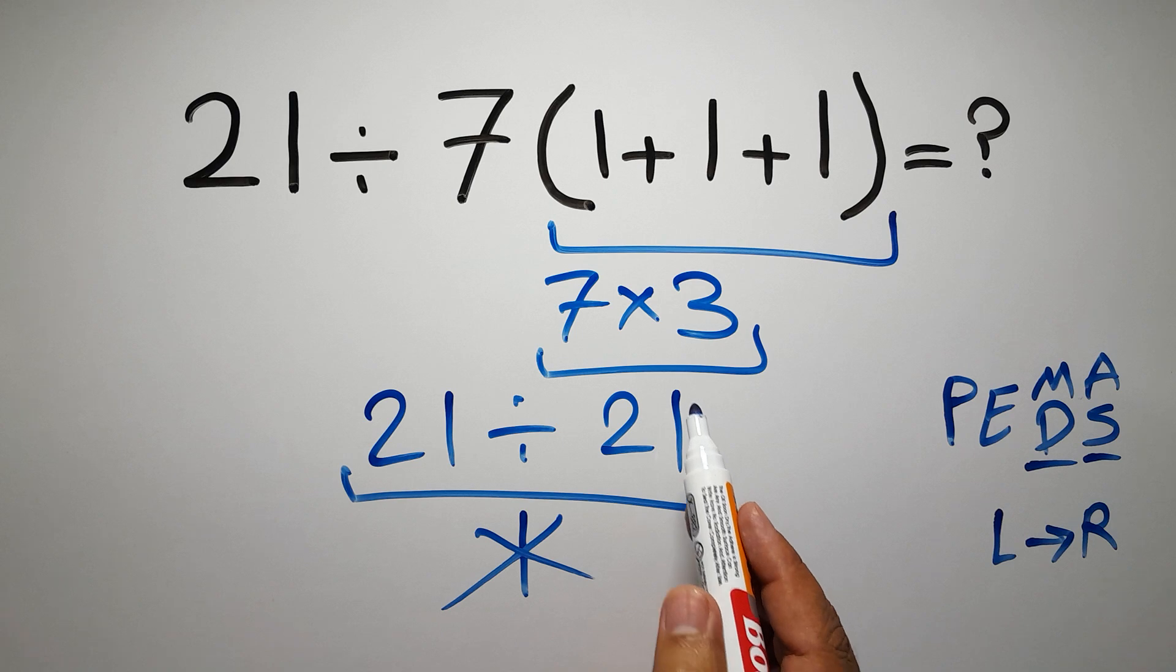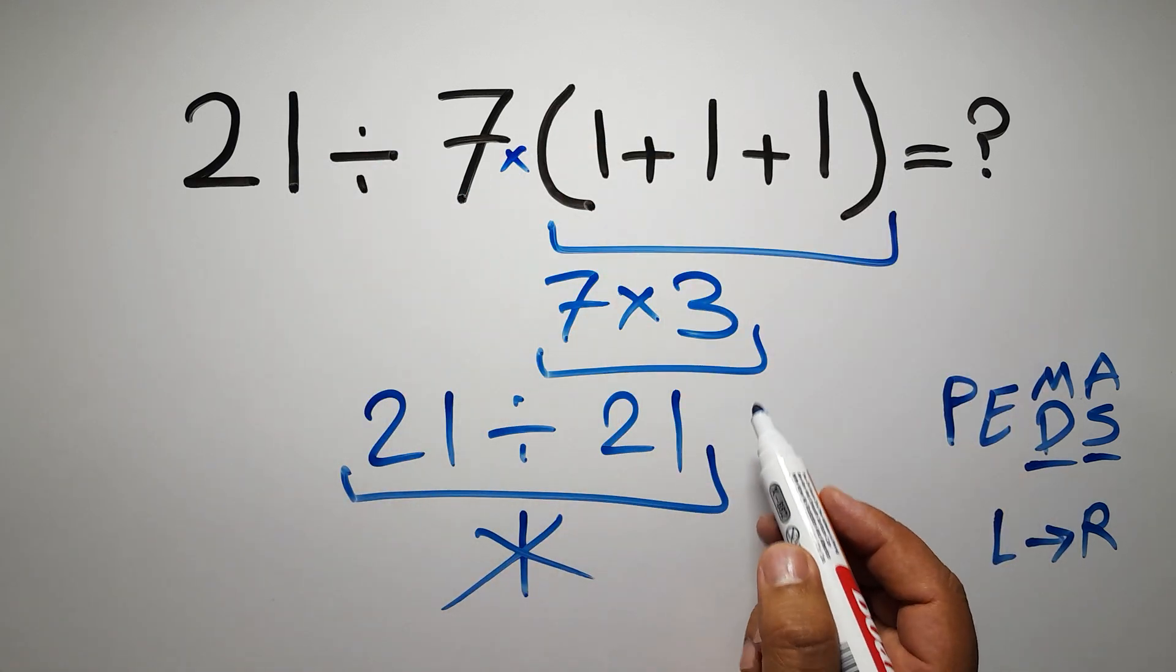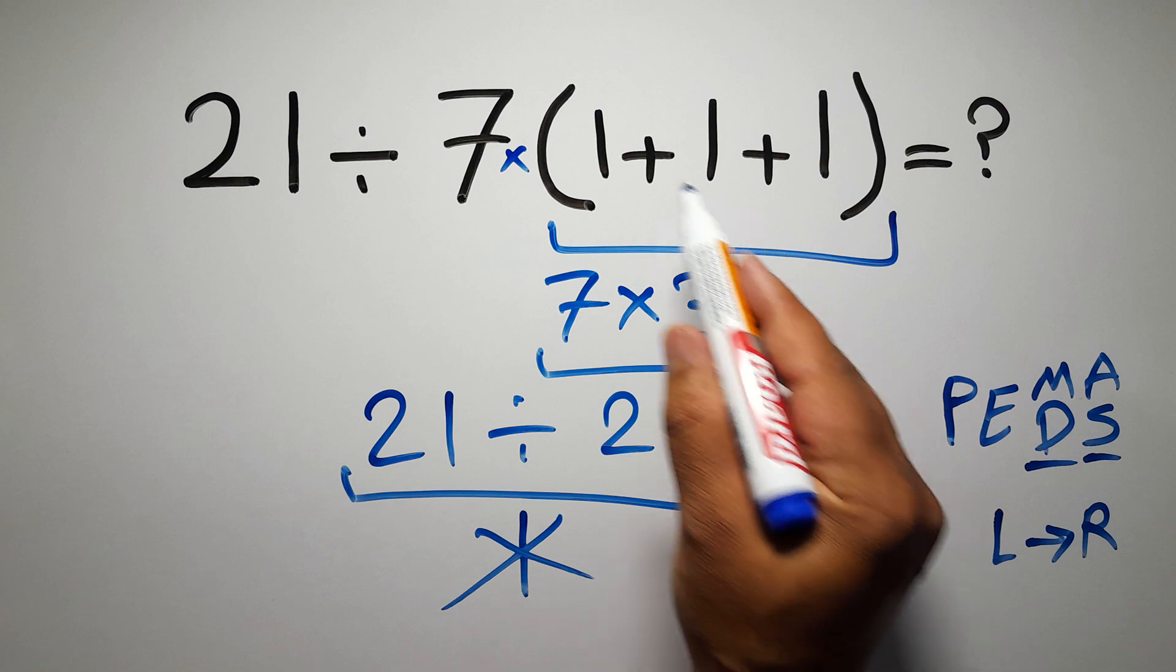In this expression, we have one division, one multiplication, and one parentheses. Inside these parentheses, we have two additions.